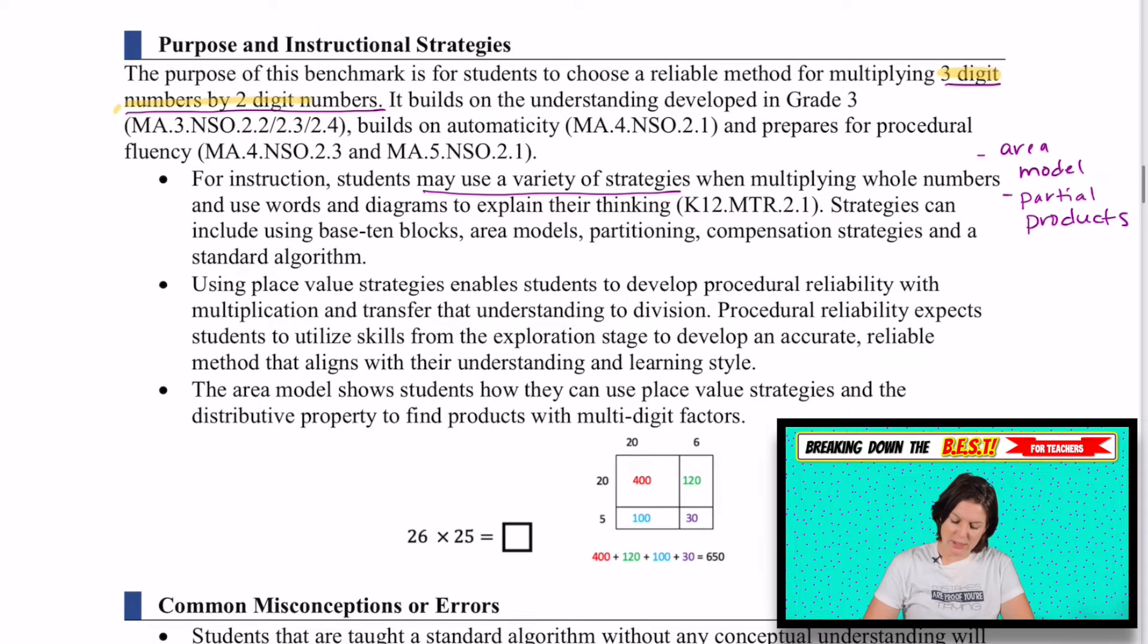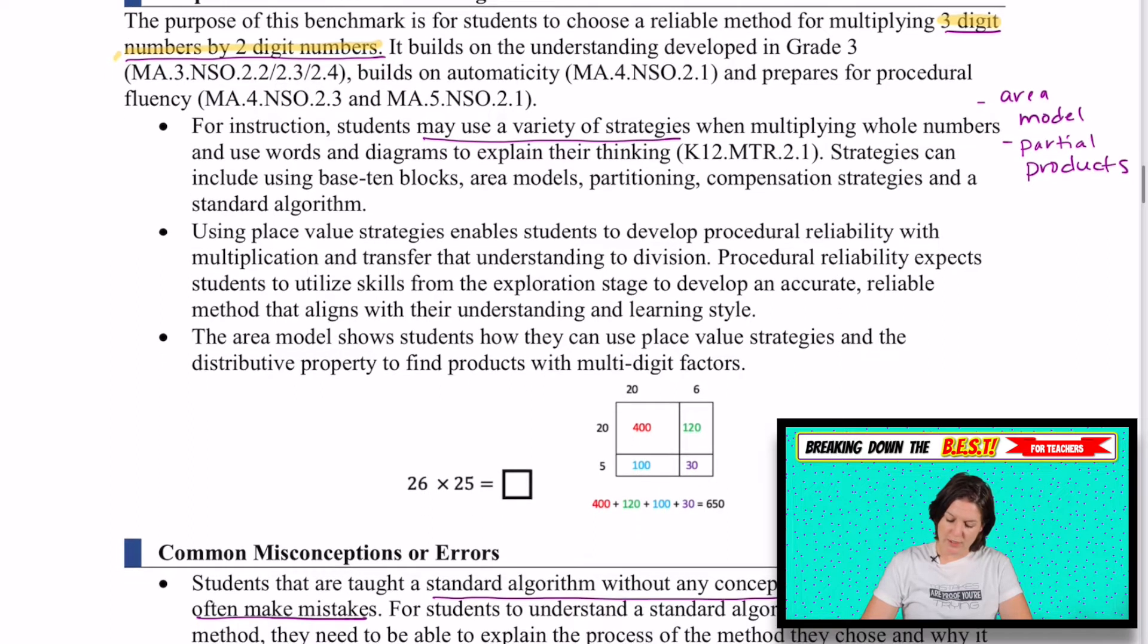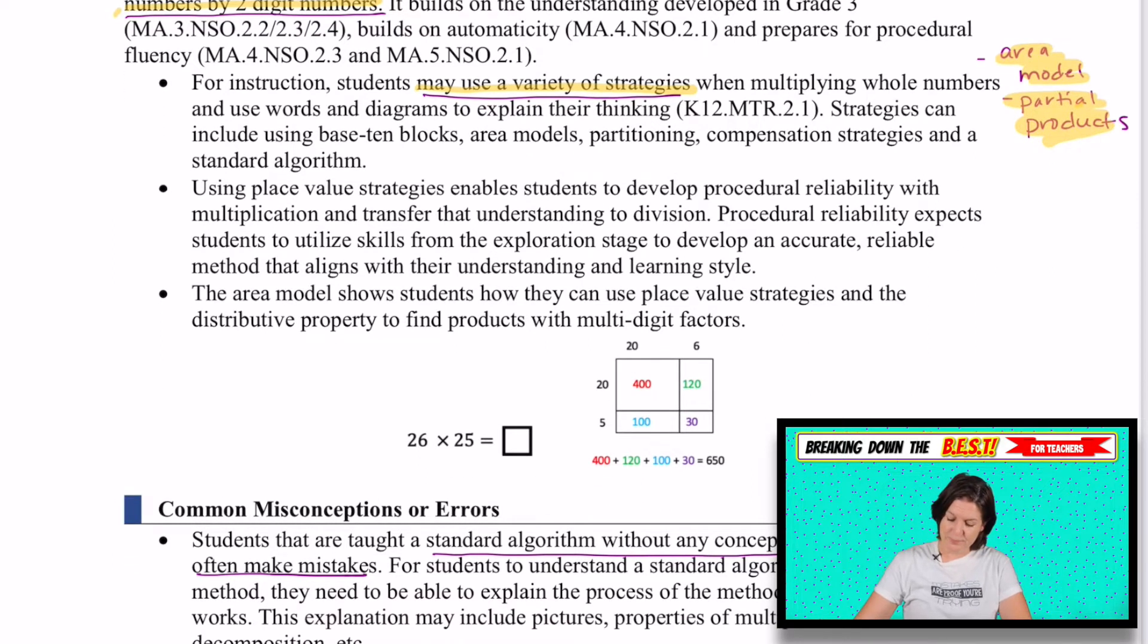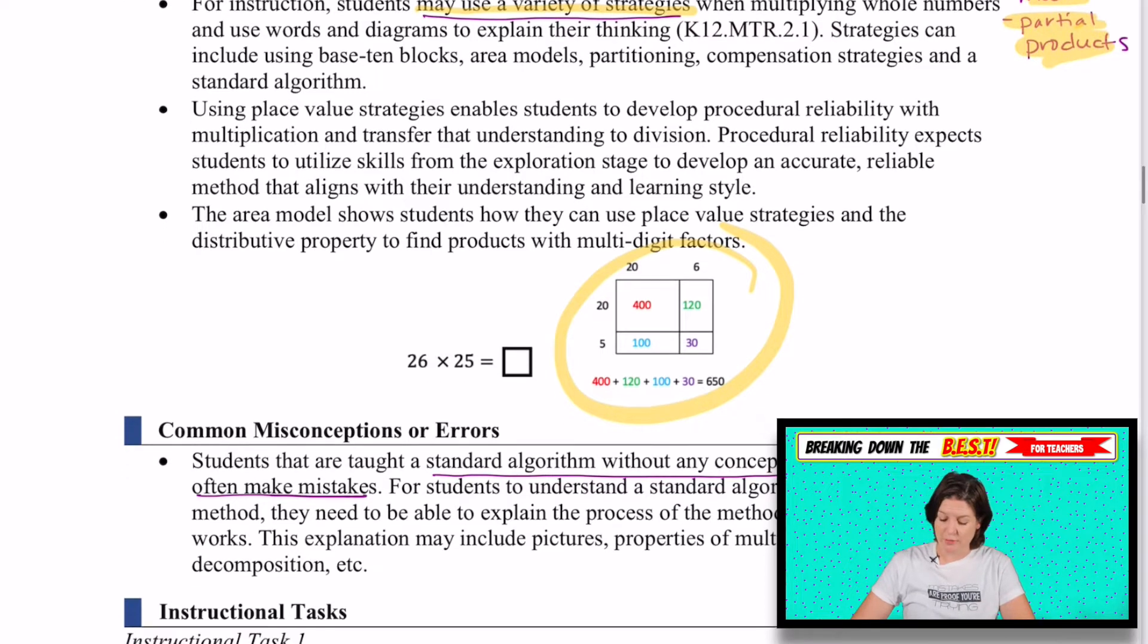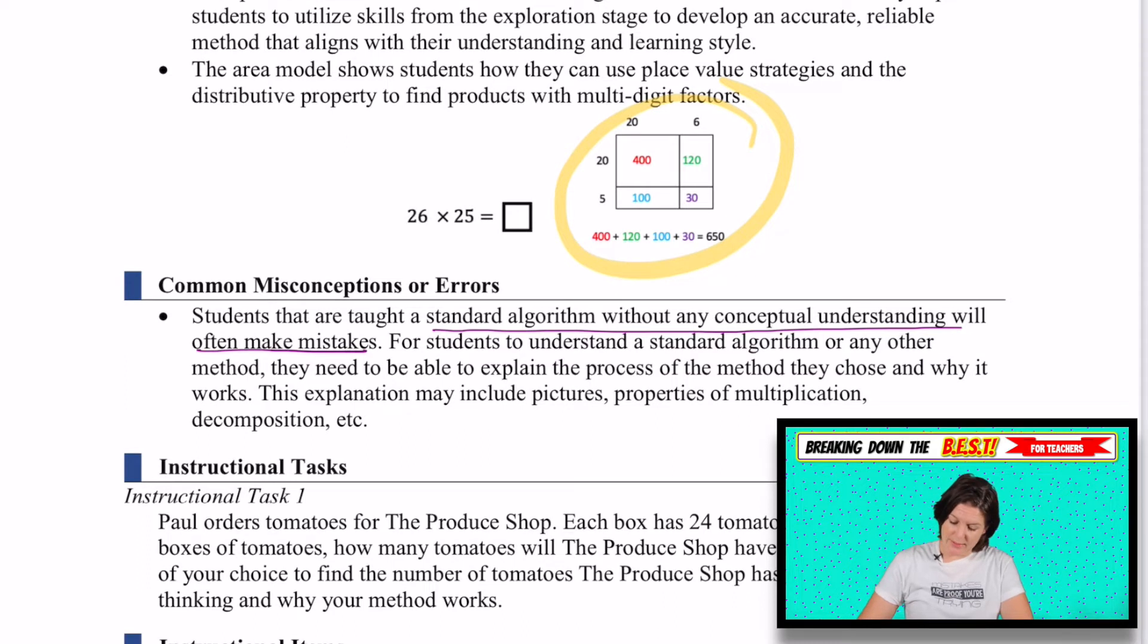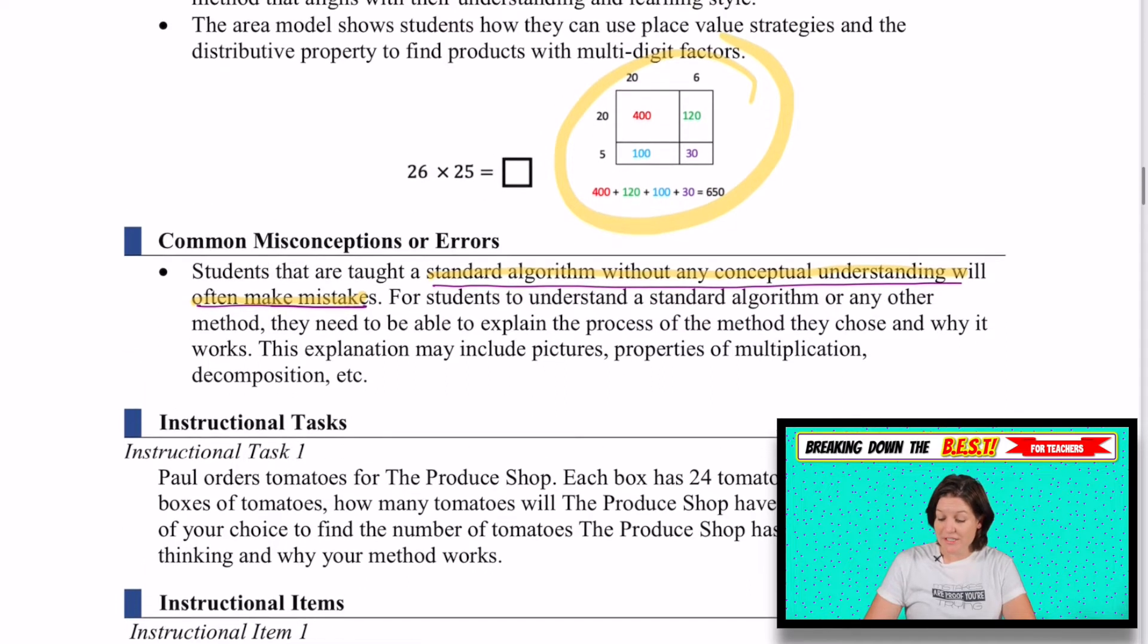Again, up to three-digit numbers by two-digit numbers, so we shouldn't be going beyond that. Students may use a variety of strategies like the area model that we'll use in taking on the BEST and the partial products model. I'll show you where that is in just a minute, but here's an example of the area model, which I'll walk through in a video. So if you've never seen anything like that, don't worry because I'm about to show you some of the video lessons that you can access to learn more. Here they're saying that students are often taught a standard algorithm without any conceptual understanding and that they will often make mistakes because of that. Meaning in this standard, we're trying to show them what's happening with these large numbers using strategies based on place value. And then in the following standard, we do teach the standard algorithm or a standard algorithm method. But if they continue to love the area model or love the partial products, they can keep continuing with that.